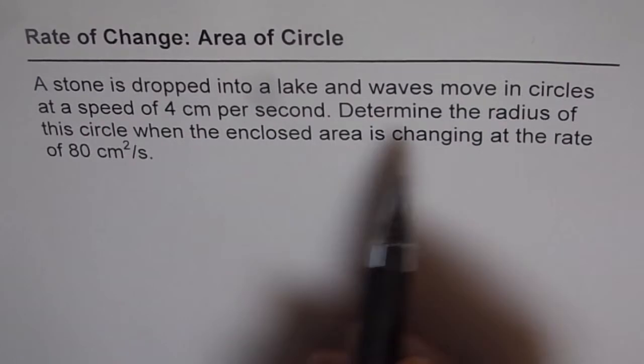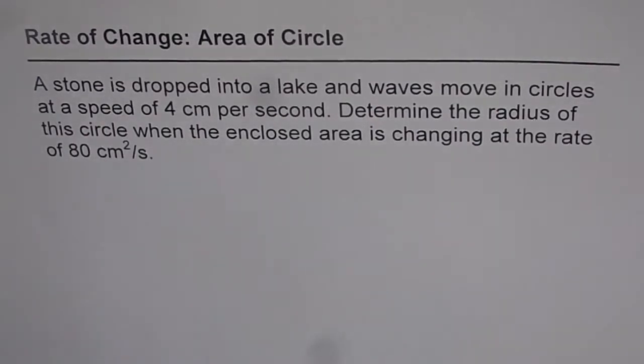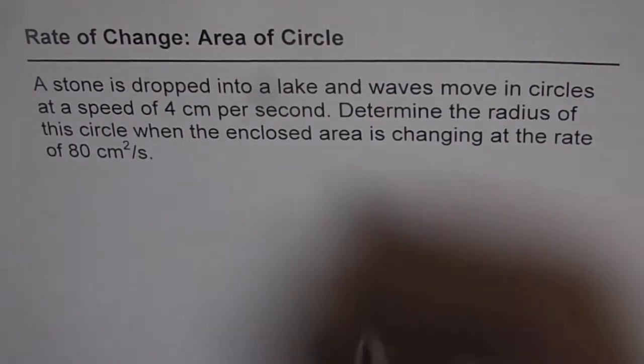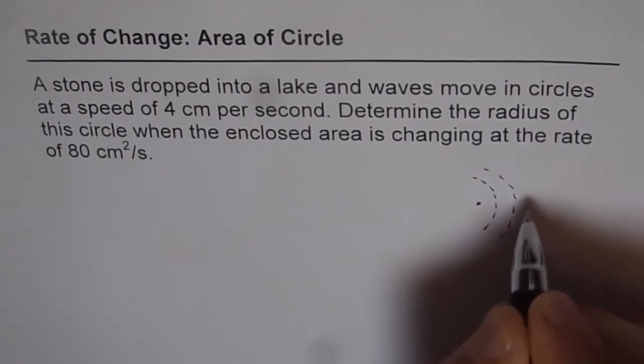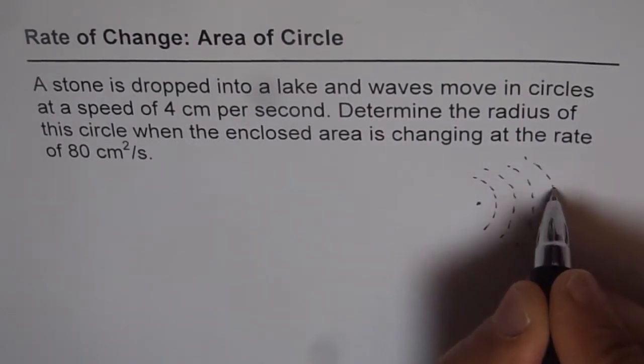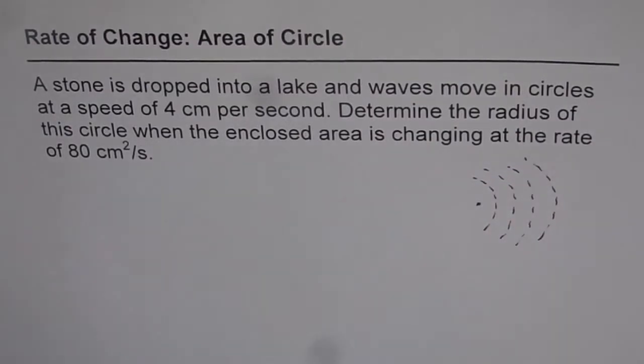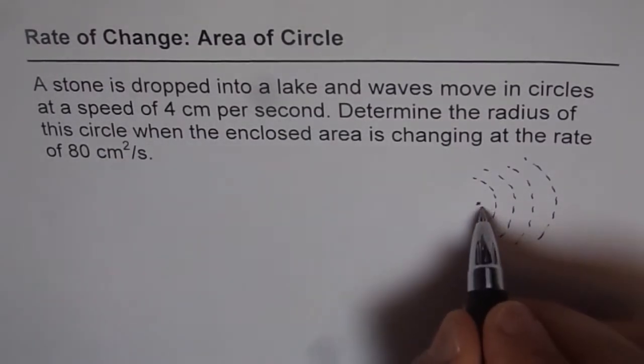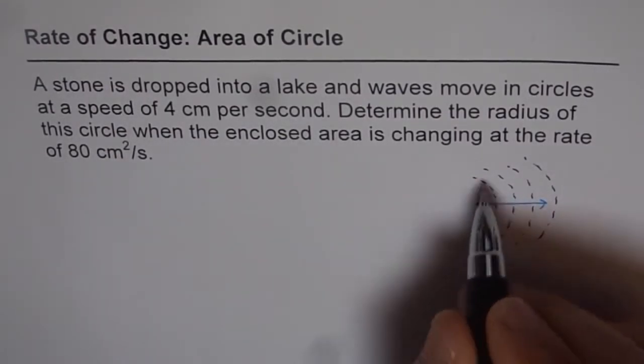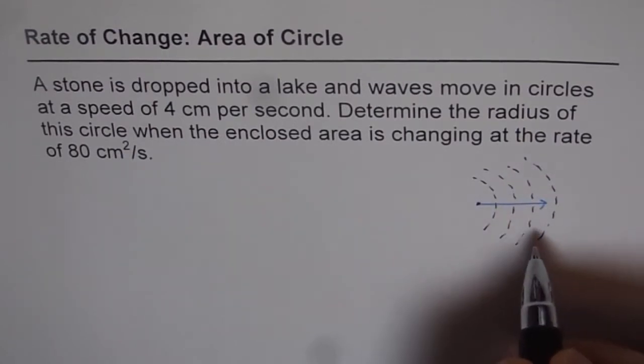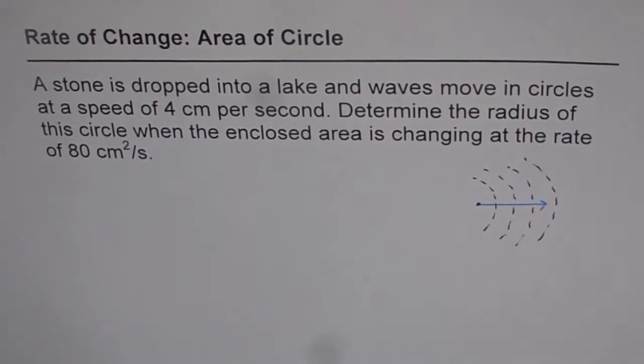What we are given here is, let's say a stone is dropped here. It produces waves, these waves, and these waves will move with time. When this stone is dropped they are moving, and as they move the radius of the circles formed increases.